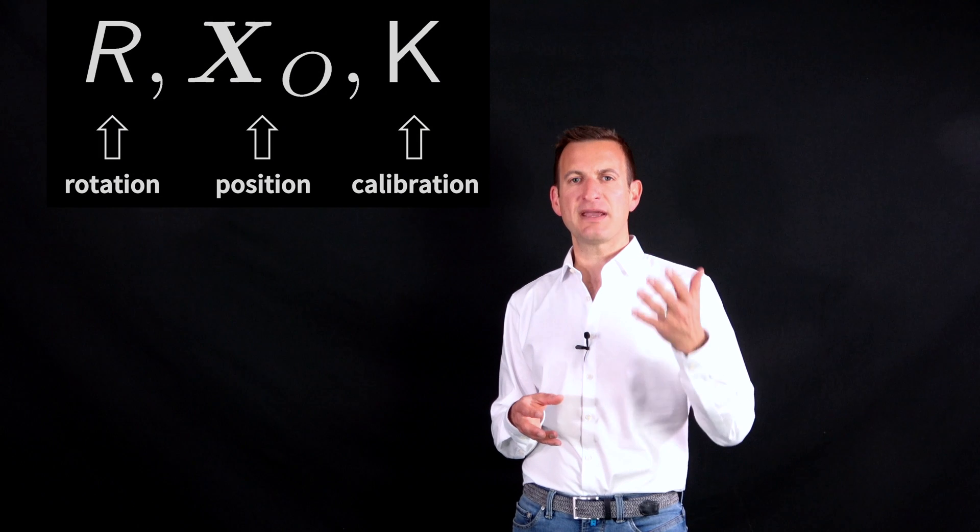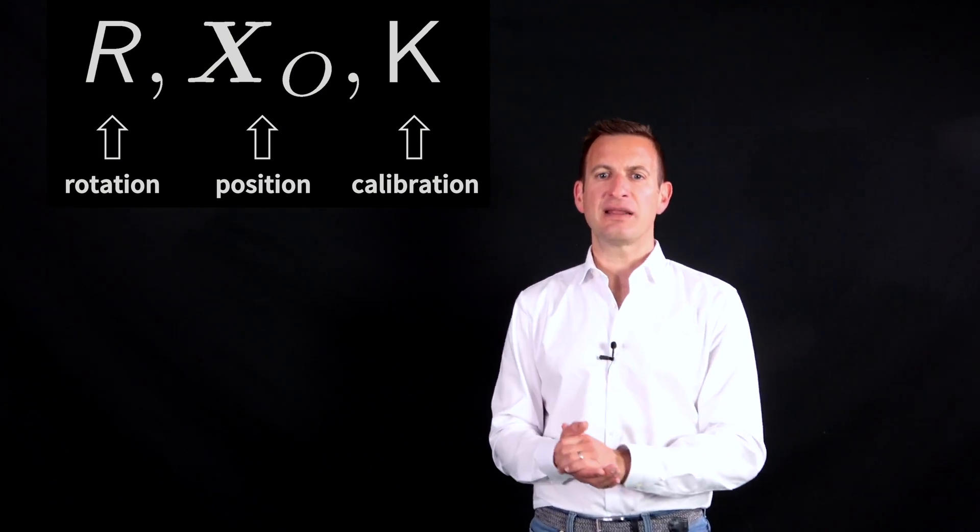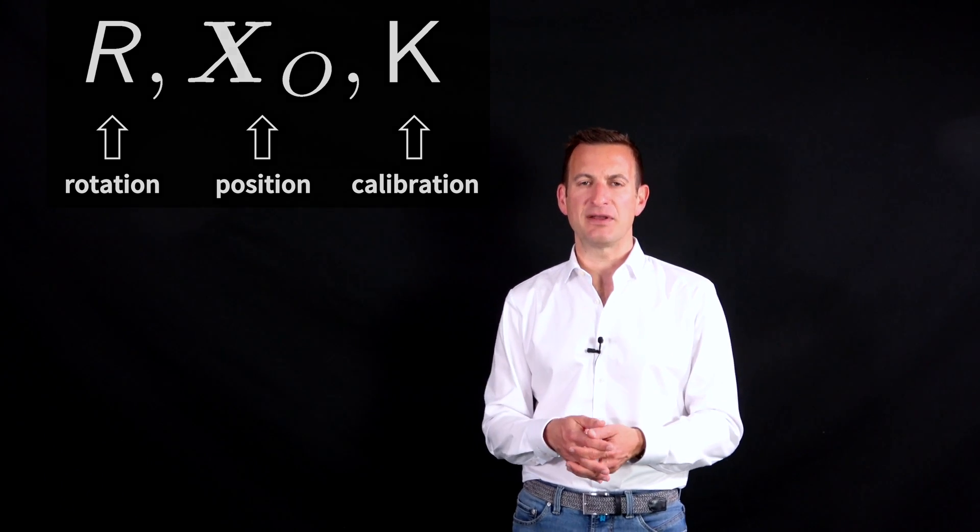So what the DLT does, it basically determines the rotation matrix, the location of the projection center, and your calibration matrix K from six or more known points from which I take an image.